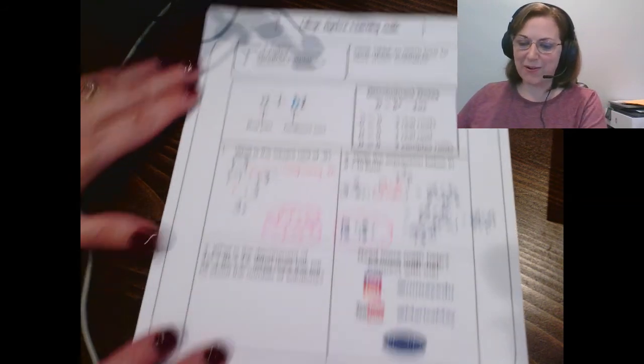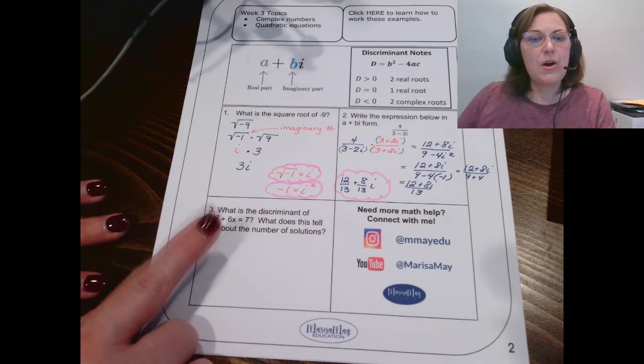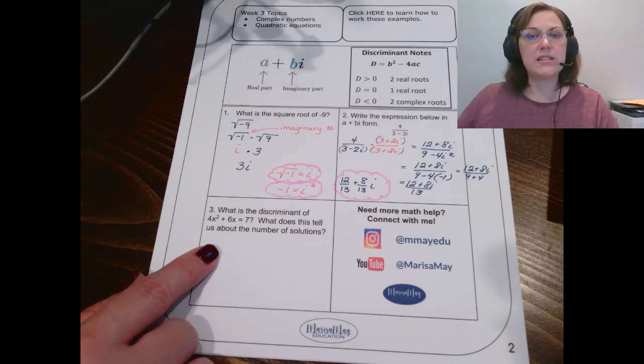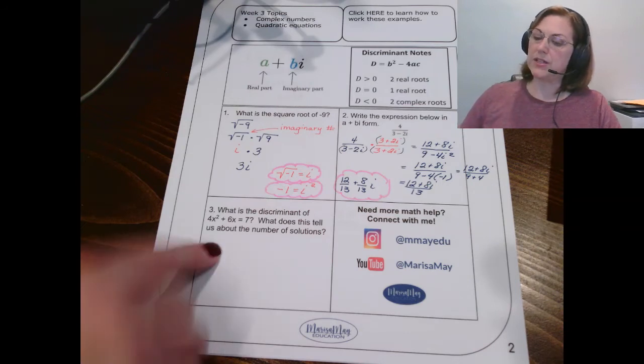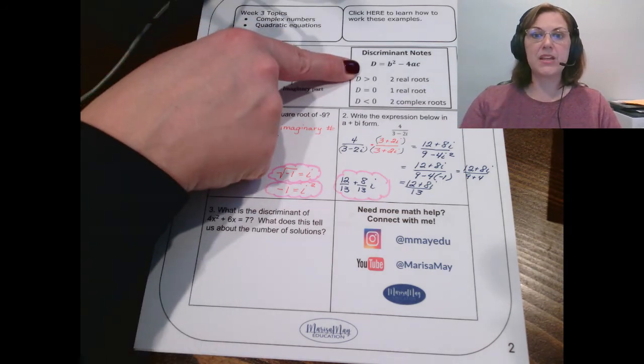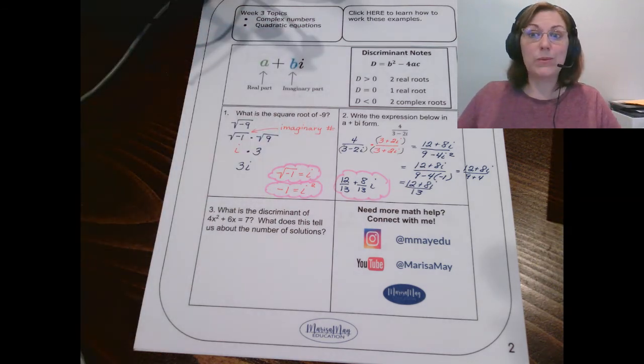All right. One more to go for this part of our learning guide. It's asking me, what is the discriminant for 4x squared plus 6x plus 7? And what does this tell us about the number of solutions? So, I want you to see the notes I left for you about the discriminant. And you might be thinking, well, where do these A's and B's and C's go?